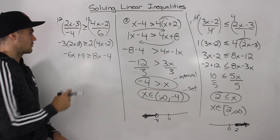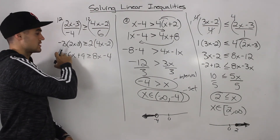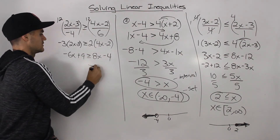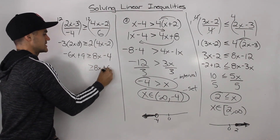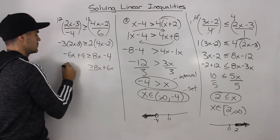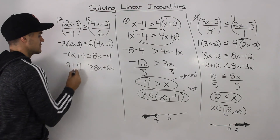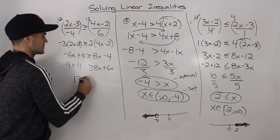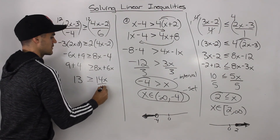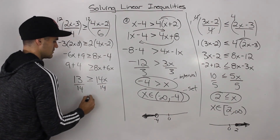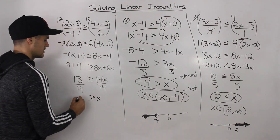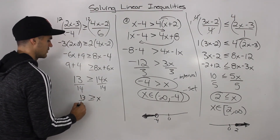Notice how bringing the x values to the right side will make them positive. So we got 8x plus 6x when we bring this negative 6x over. Then this negative 4, bringing over to the left side, becomes positive 4. So we have 13 greater than or equal to 14x. Divide both sides by 14. The answer is x is less than or equal to 13 over 14. Let's just leave it in fractions.